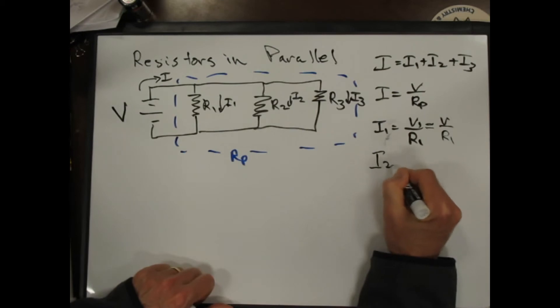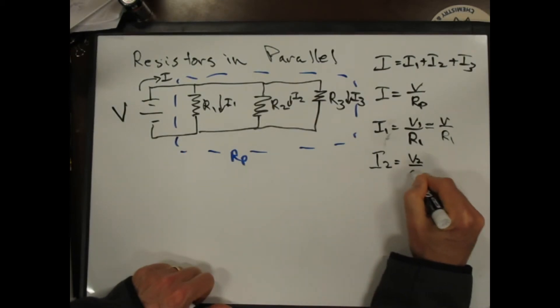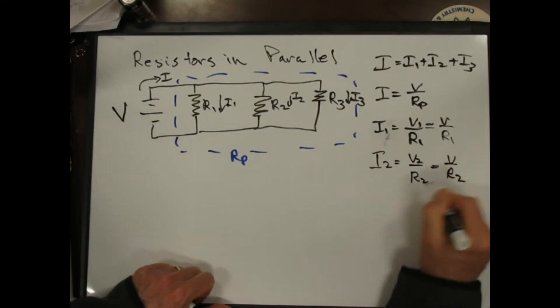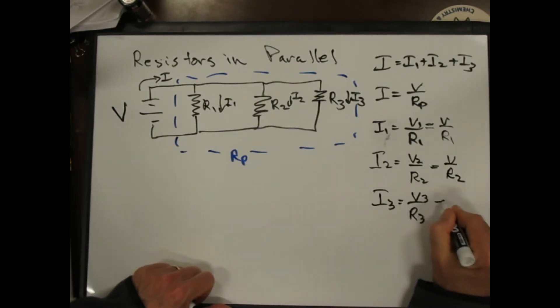Similarly, I2 is equal to V2 over R2, which is just V over R2. And finally, I3 is V3 over R3, which is just V over R3.